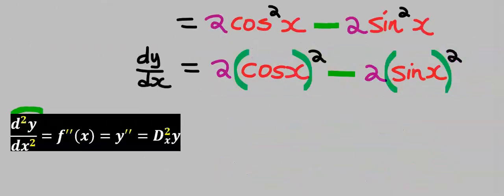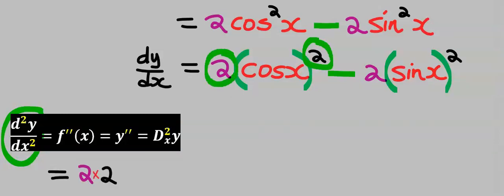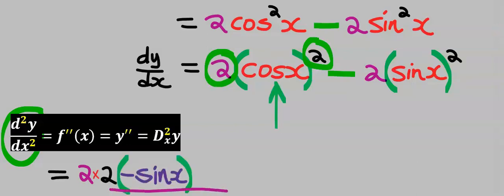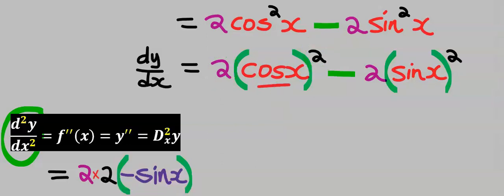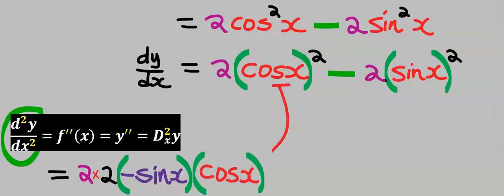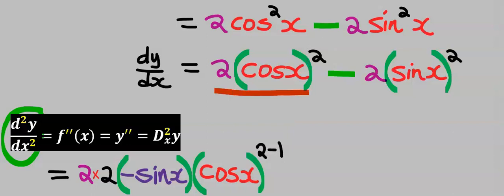To find the second derivative, these two at the top come down to multiply. Next, differentiate cos(x) and you have minus sin(x). Next, recopy back this cos(x). The two at the top will minus 1 according to the power rule. We are done with this term.